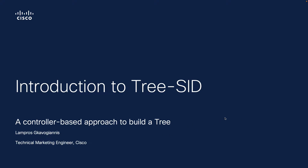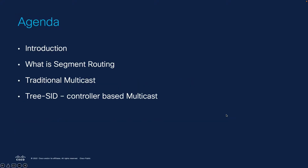3C is a Multicast technology innovation which is a controller-based approach to build a tree. The agenda for today consists of the following: we will begin with an introduction to Segment Routing, explain what it is, and then move over to Multicast and how it can benefit by a controller-based approach.